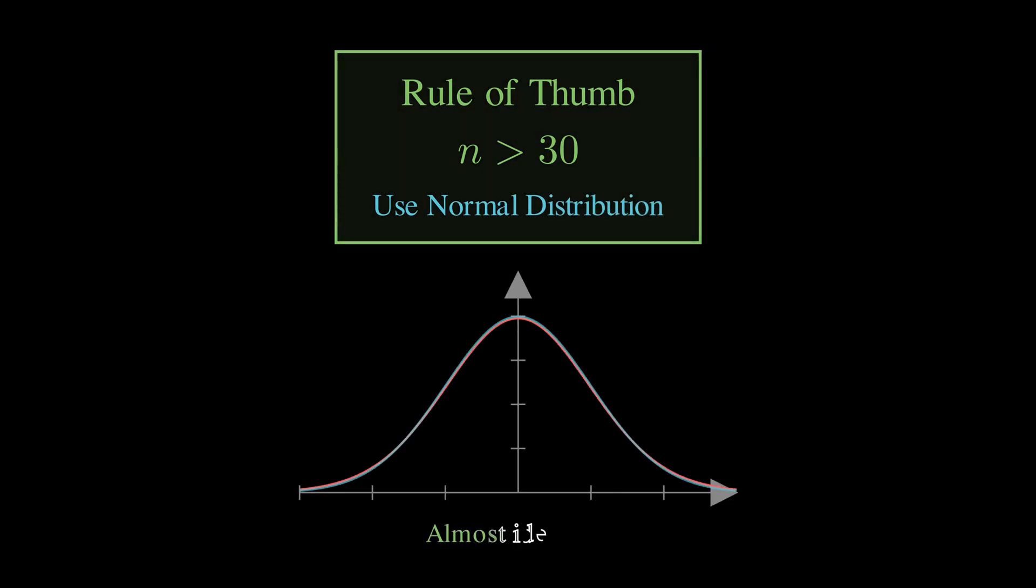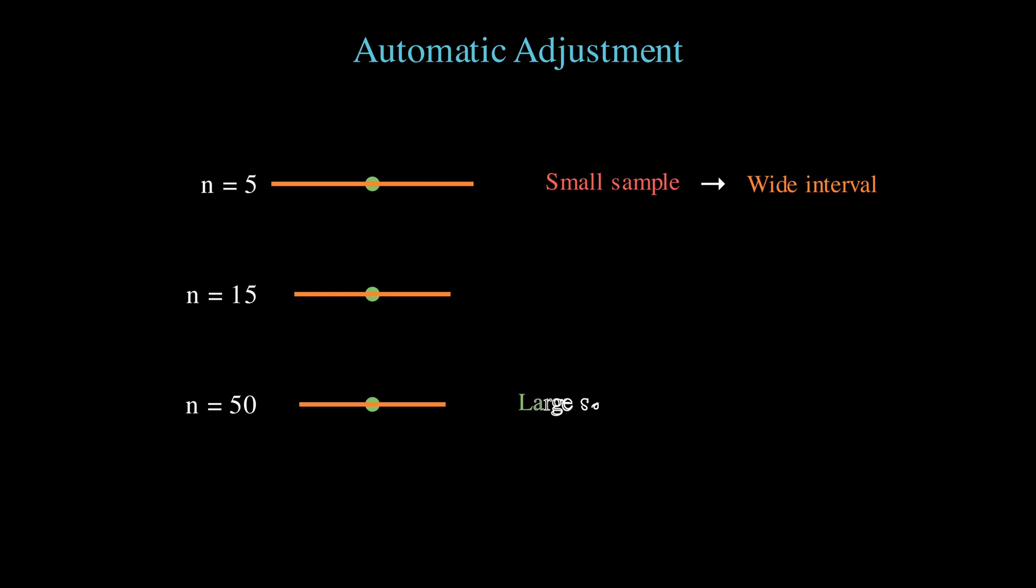But here's what I really find elegant about the t-distribution. It automatically adjusts for sample size in exactly the right way, giving you wider confidence intervals when you have less data and narrower ones when you have more data. And this is exactly what you want intuitively. Think about it this way. If I asked you to estimate the average height of people in your country based on measuring just 3 people, you would want to express a lot of uncertainty in your answer. But if you measured a thousand people, you'd be much more confident, and the t-distribution captures this perfectly.